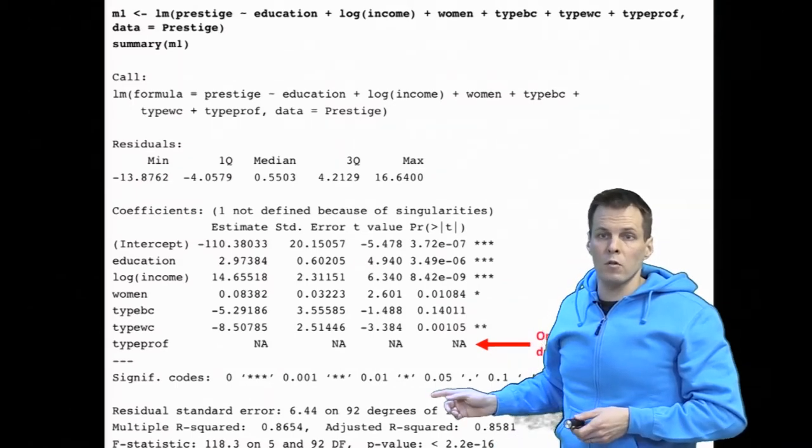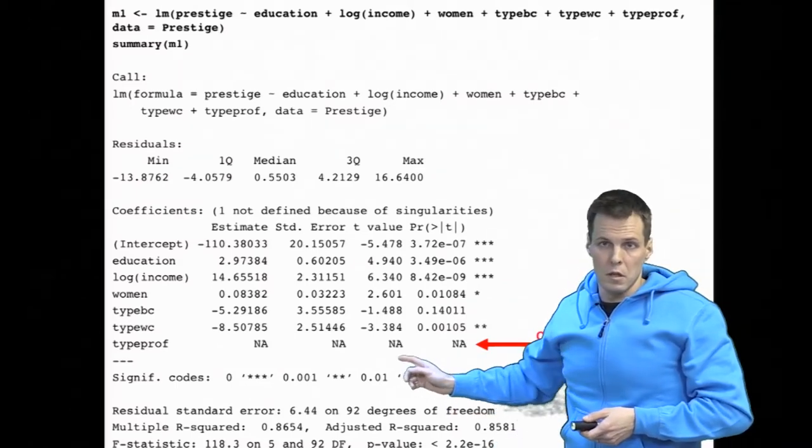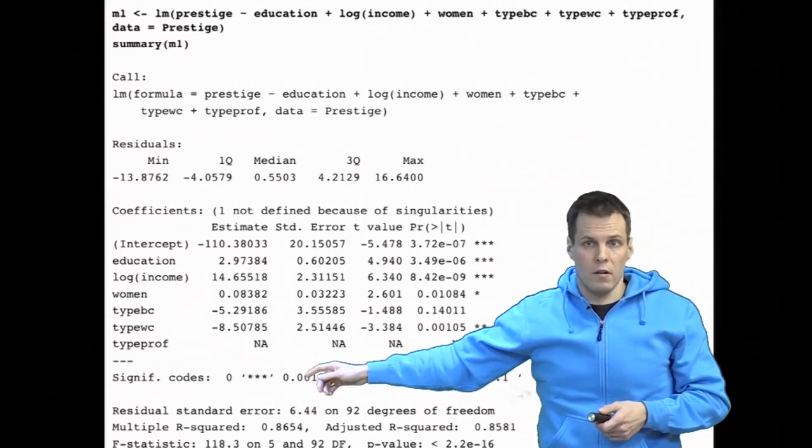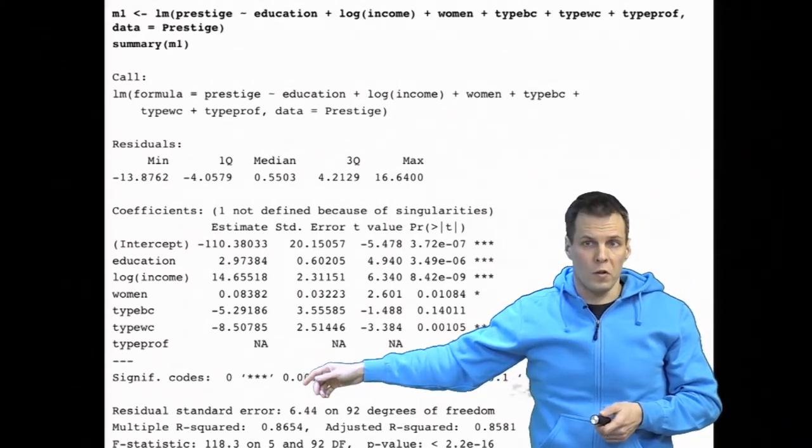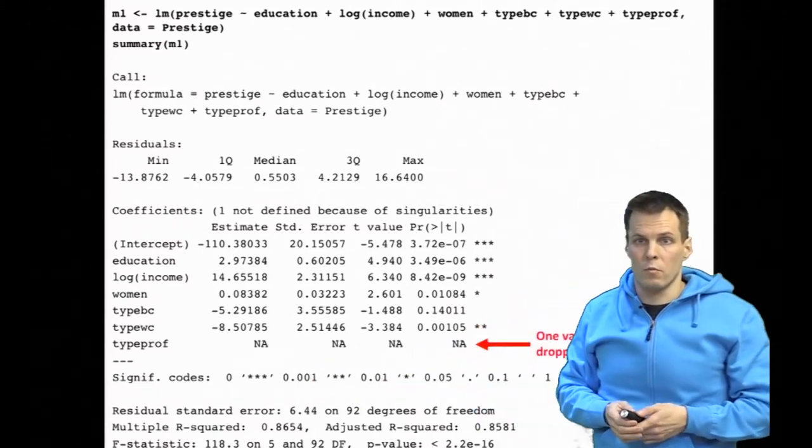So when you see that you don't get estimates for some of the variables, that is a pretty good indication that you are in violation of the no perfect collinearity assumption and you need to do something about your model.